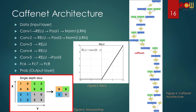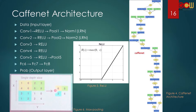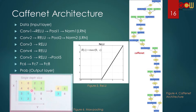When the 2x2 filter slides over an area, with max pooling we choose the biggest value and save it. The stride is 2, so there is no overlapping — the filter moves to the next area and again picks the biggest value to save. This is what max pooling looks like.